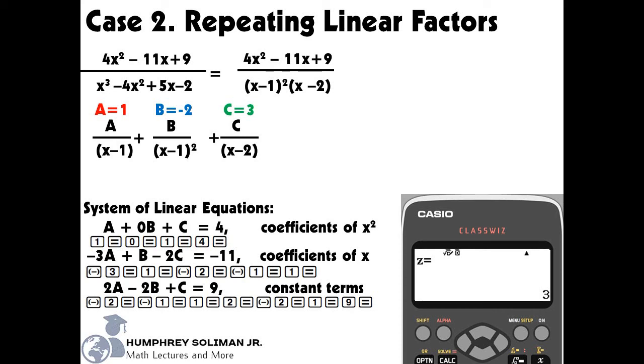Please make sure that you don't switch the values of A, B, and C, or else your answer will be inaccurate. Our final answer in decomposing the rational expression into 3 partial fractions is: 1 over the quantity x minus 1, minus 2 over the quantity x minus 1 squared, plus 3 over the quantity x minus 2. I hope this video helped you learn about Case 2 of partial fraction decomposition: repeating linear factors.